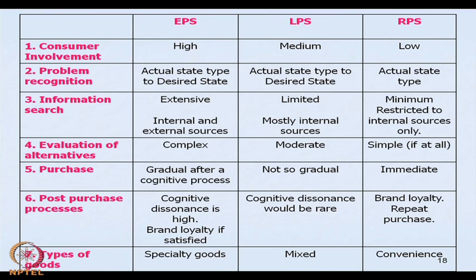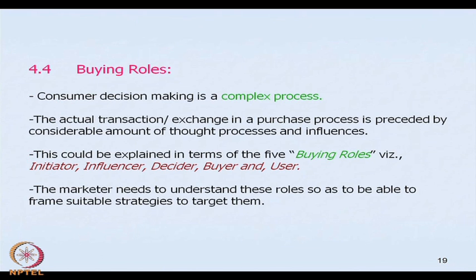In post-purchase processes, cognitive dissonance is very high in EPS; if the consumer is satisfied, it develops into brand loyalty. In LPS, dissonance is very rare. In RPS, there is no dissonance at all — consumers are brand loyal and extremely confident. Finally, in terms of types of goods: EPS is with respect to specialty goods; LPS involves mixed goods such as shopping goods, convenience goods, or repeat purchases of specialty goods; and RPS is more of convenience goods. This brings us to the next topic: buying roles.